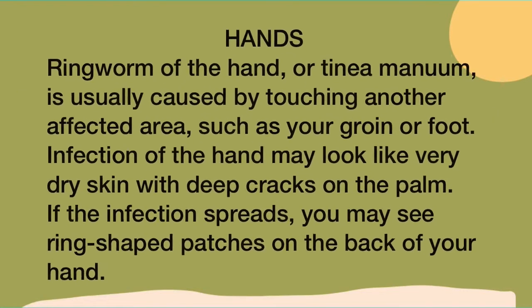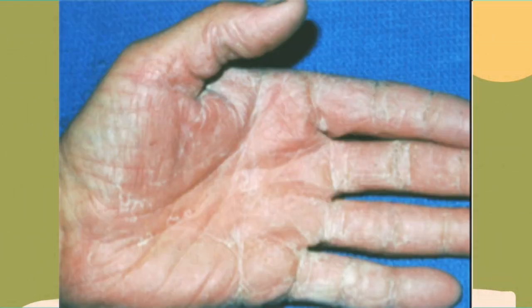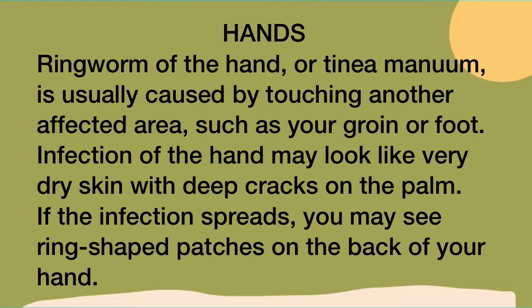Ringworm of the hand, or tinea manuum, is usually caused by touching another affected area such as your groin or foot. Infection of the hand may look like very dry skin with deep cracks on the palm. If the infection spreads, you may see ring-shaped patches on the back of your hand.